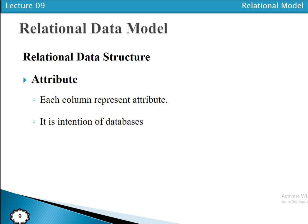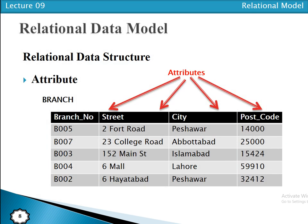Attributes in a relation can be in any order and the relation will still convey the same meaning. For example, if postal code is at the second position and street is at the last position, or city is at the first position and branch number is at the last, the relation still conveys the same meaning.